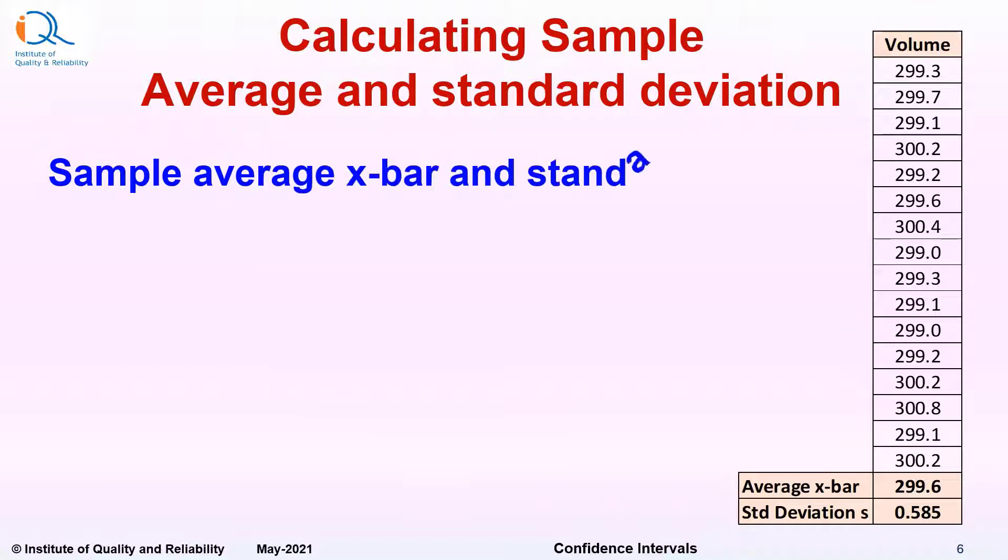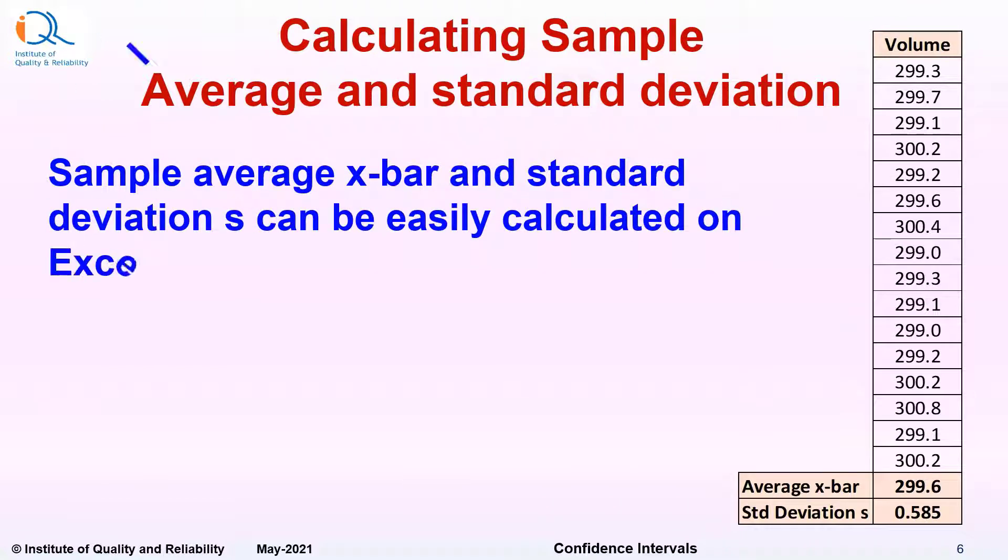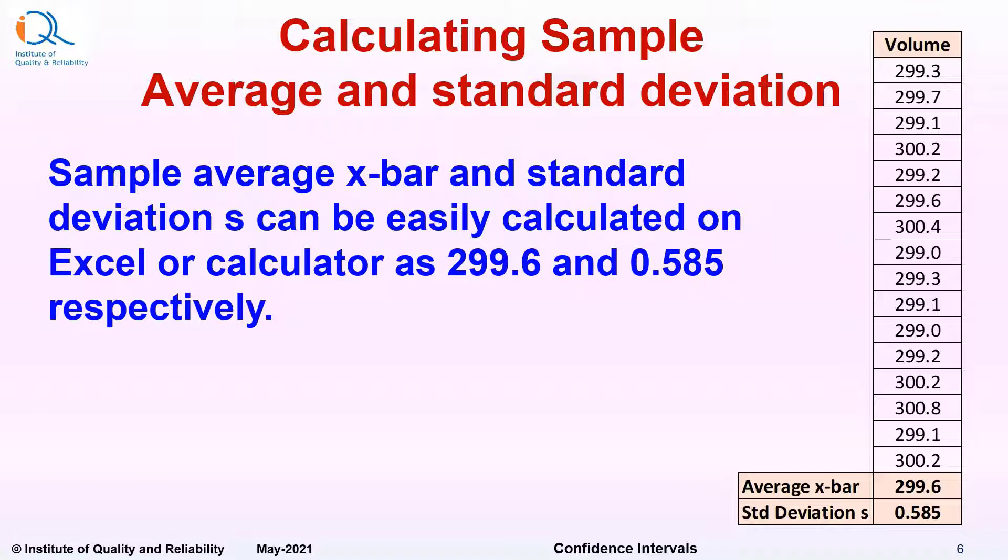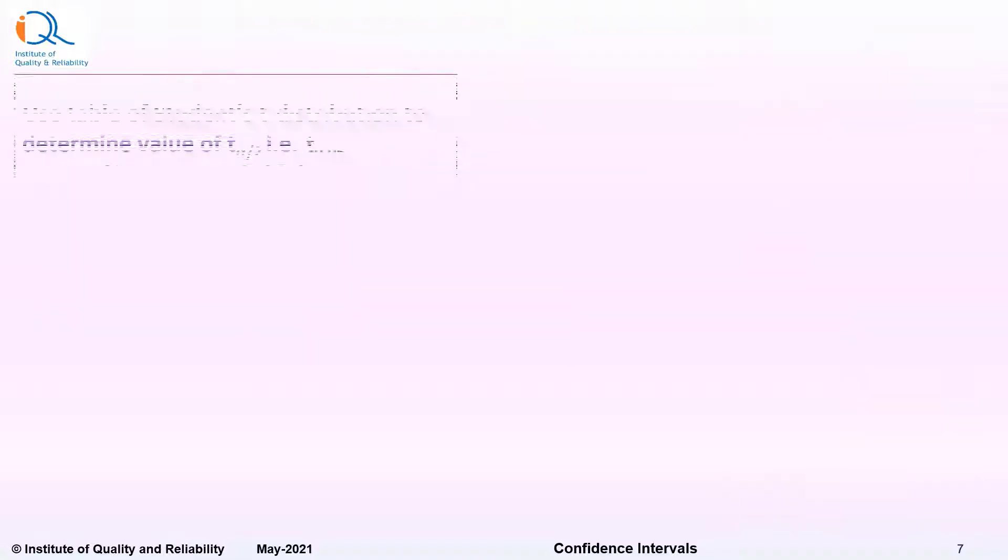Sample average x̄ and sample standard deviation s can be easily calculated on Microsoft Excel or calculator as 299.6 and 0.585 respectively. Use table of student's t distribution to determine value of t(α/2) for 2-tailed alpha risk of 5%, i.e. t.05.